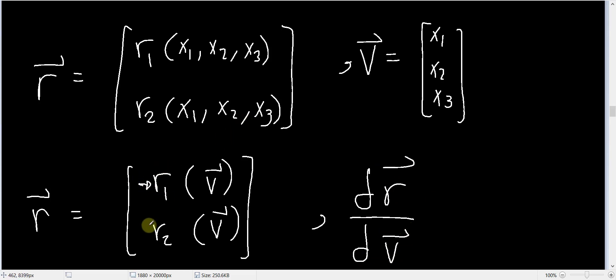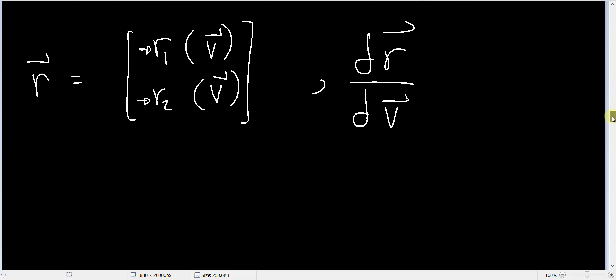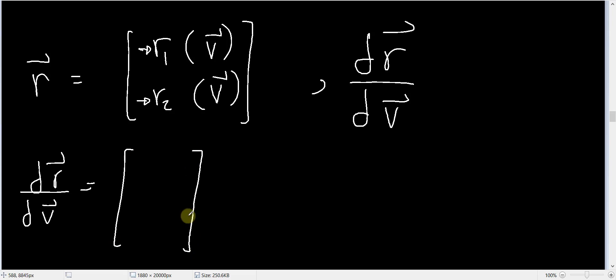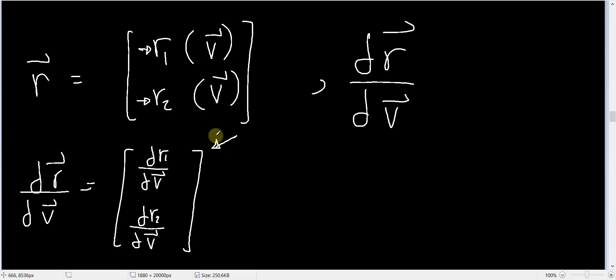The two components r1 and r2 are independent of each other. To know how the vector r changes as vector v changes, we need to know how every component of r changes as v changes. So we expect dr/dv to have two components: dr1/dv as a vector and dr2/dv as a vector. It might be a row, but we expect those two components.